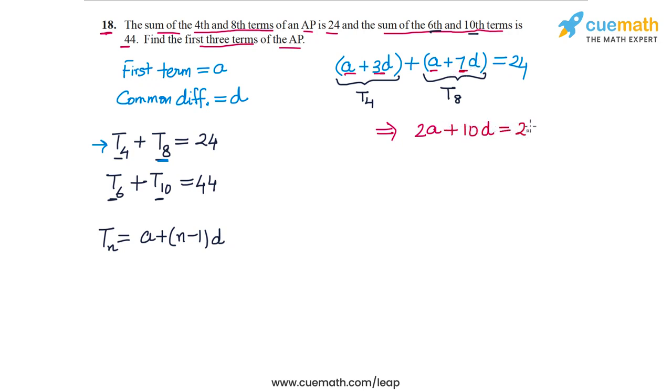If I take out the common factor of 2 from the left hand side and divide it on the right side, I get A plus 5D equals 12. So this is the first equation in A and D.